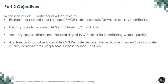With that, we'll start with today's part. Part two objectives are that by the end of this session, you should be able to explore the current and planned PACE data products for water quality monitoring; identify how to access PACE ocean color instrument Level 1, 2, and 3 data; identify applications and the usability of PACE data for monitoring water quality; and analyze and visualize available OCI remote sensing reflectances Level 2 and Level 3 water quality parameters using NASA's open source software CDAS.